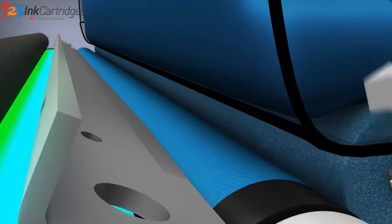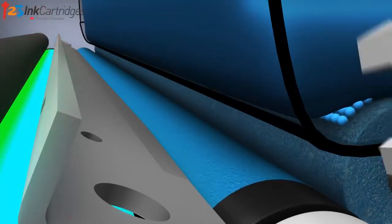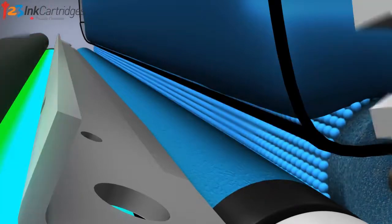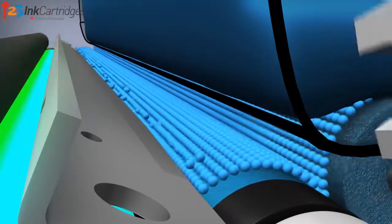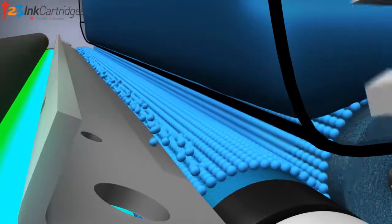Toner is stirred in the hopper and the toner adder roller collects the toner, moving it to the surface of the developer roller. The doctor blade then levels it to the precise height.